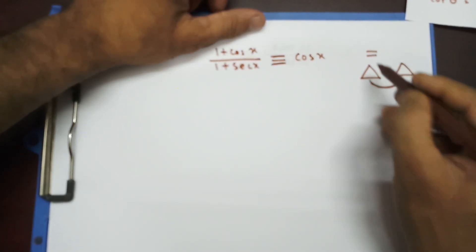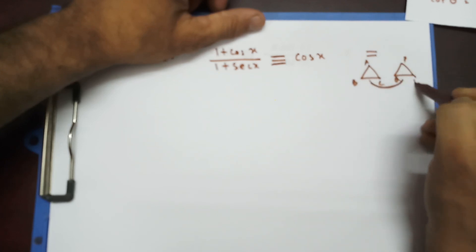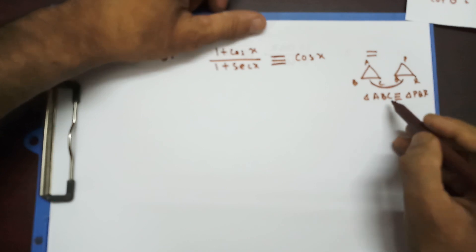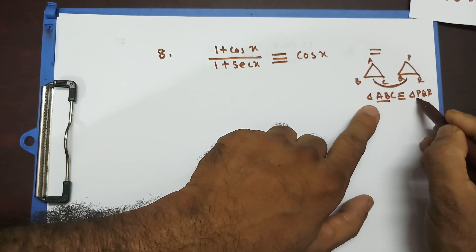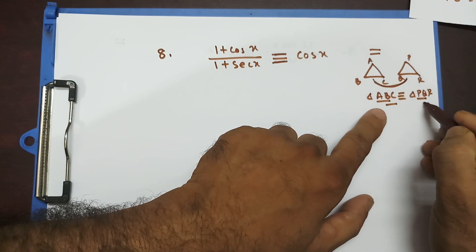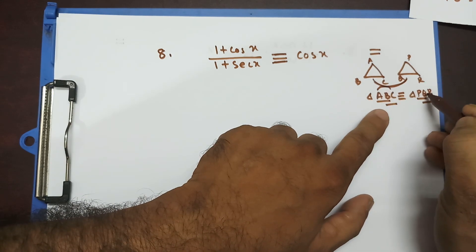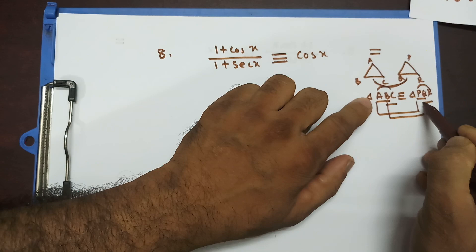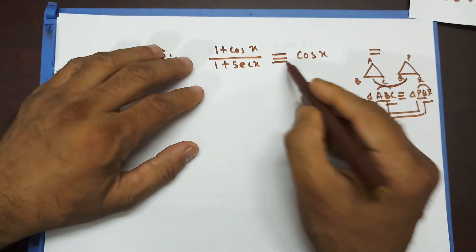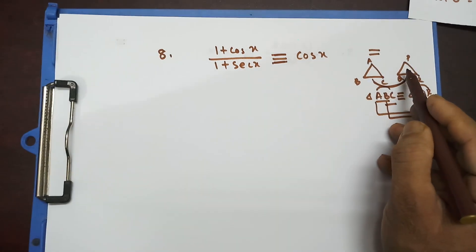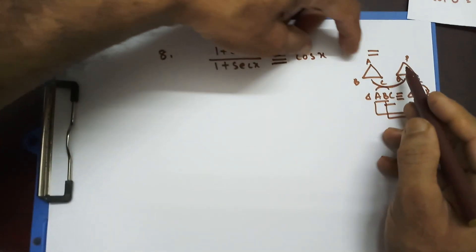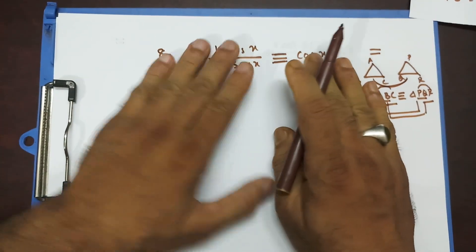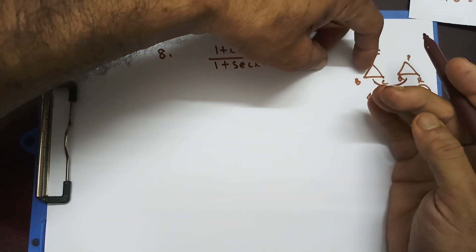Let's talk about congruent triangles. If triangle ABC is congruent to triangle PQR, that means side AB equals side PQ, side BC equals side QR, and side AC equals side PR. Angle A equals angle P, angle B equals angle Q, angle C equals angle R — corresponding angles. So congruent means every corresponding side and every corresponding angle are equal to each other. Whenever 'identical' is given, we don't bring anything from left-hand side to right-hand side; we just equate the coefficients.